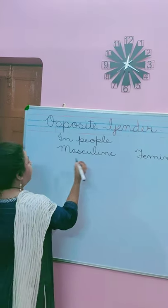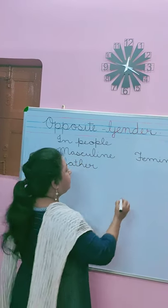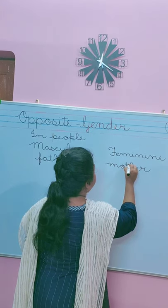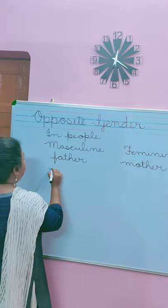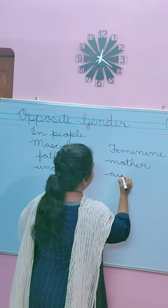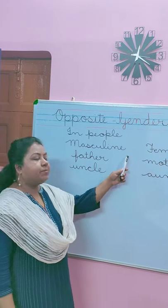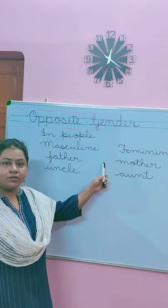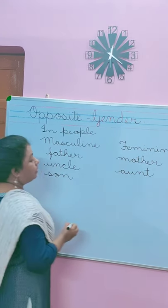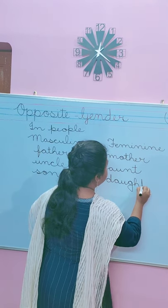So in people: masculine — father, F-A-T-H-E-R — and feminine — mother, M-O-T-H-E-R. Masculine — uncle, U-N-C-L-E — and feminine — aunt. Remember it. Masculine — son, S-O-N — and feminine — daughter, D-A-U-G-H-T-E-R.